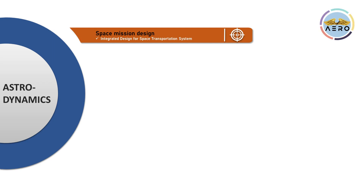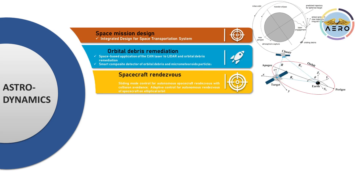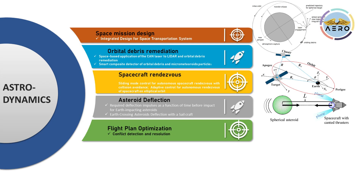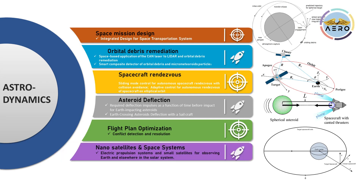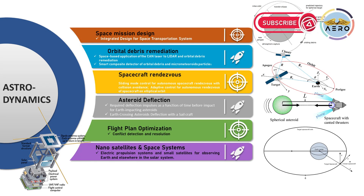Some aerospace students can also enter astrodynamics or orbital mechanics, covering space mission design, orbital debris, spacecraft proximity operations, asteroid deflection, flight plan operations, conflict detection and resolution, nanosatellites, and space systems. Within space systems, you can work on electric propulsion and small satellite development for Earth observation and solar system exploration. These topics mostly fall under Pi-shaped professionals.